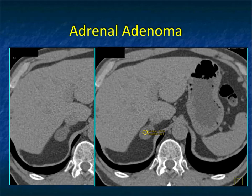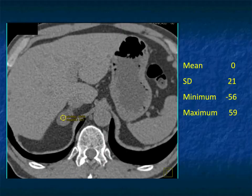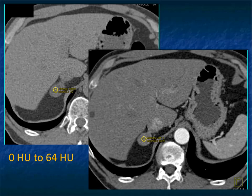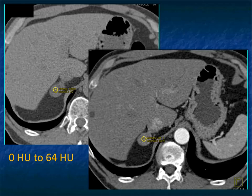Here's a well-defined adrenal lesion measuring minus 56 Hounsfield units — the mean is zero — it's an adenoma, very simple. The challenge is when you have contrast on board. Even the most benign adenoma can enhance with contrast. Here, with IV contrast in early phase, the lesion measures 64. If that's your only set of images, there's no way to determine whether it's a benign incidentaloma or needs further evaluation.